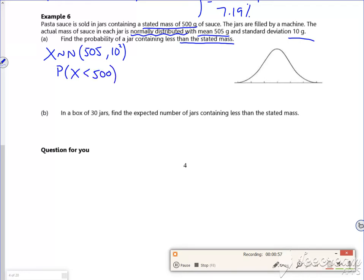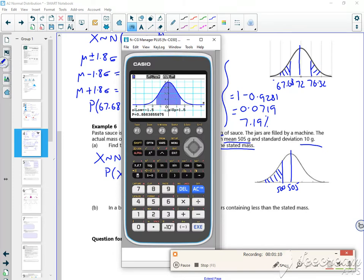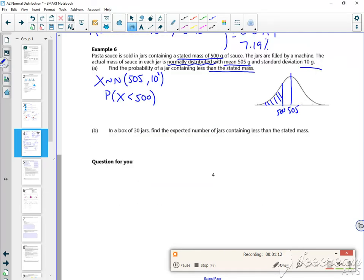So in terms of my picture, my mean is 505 and I want less than 500. So let's see what it is. Bring it up on the calculator. Do it on the calculator.